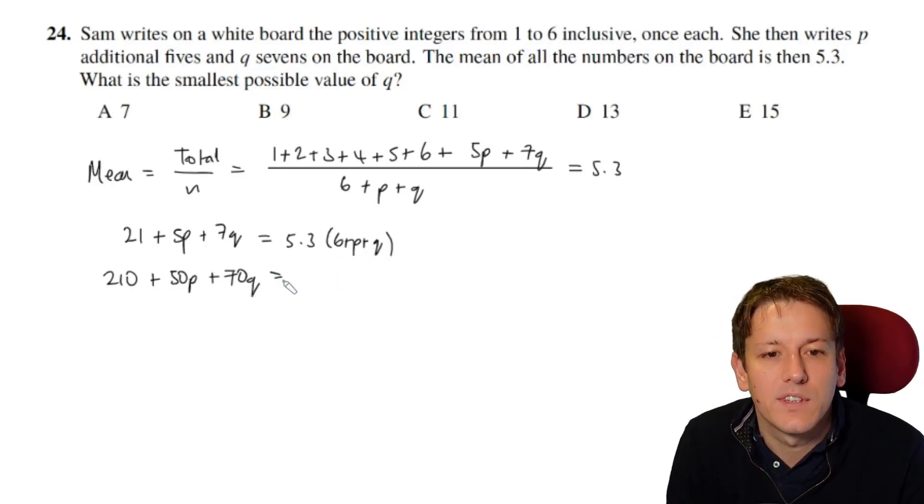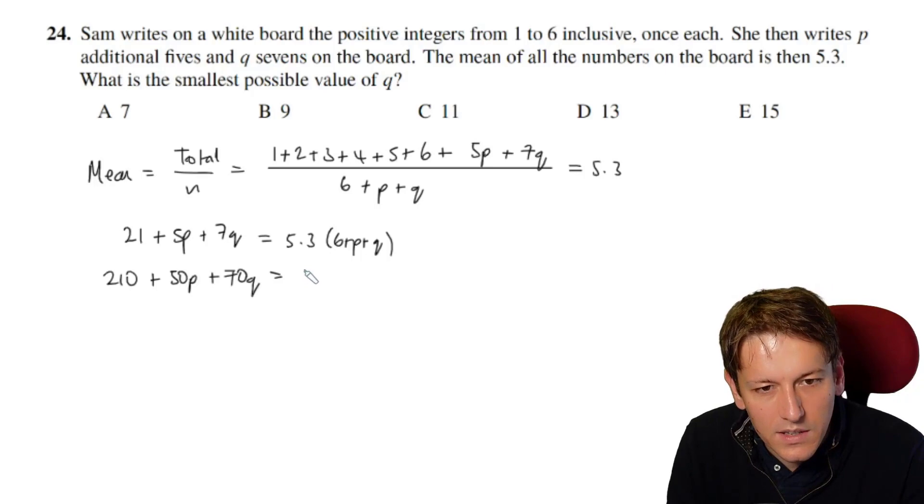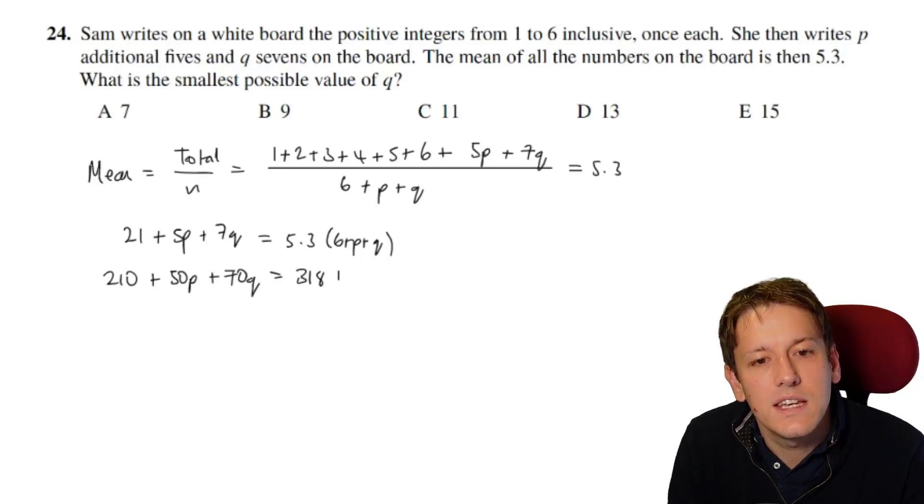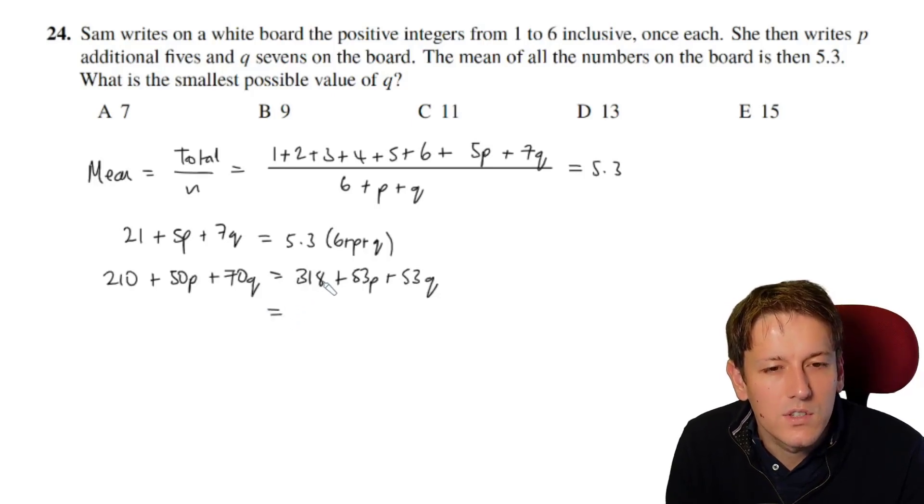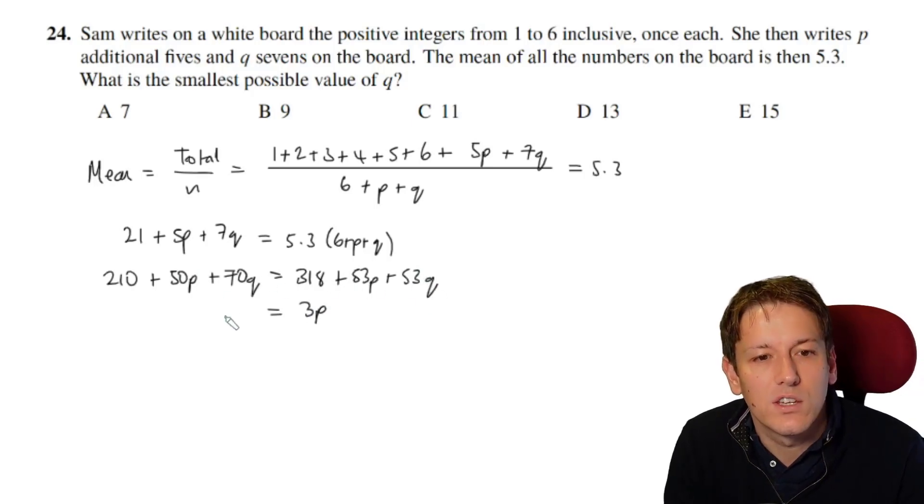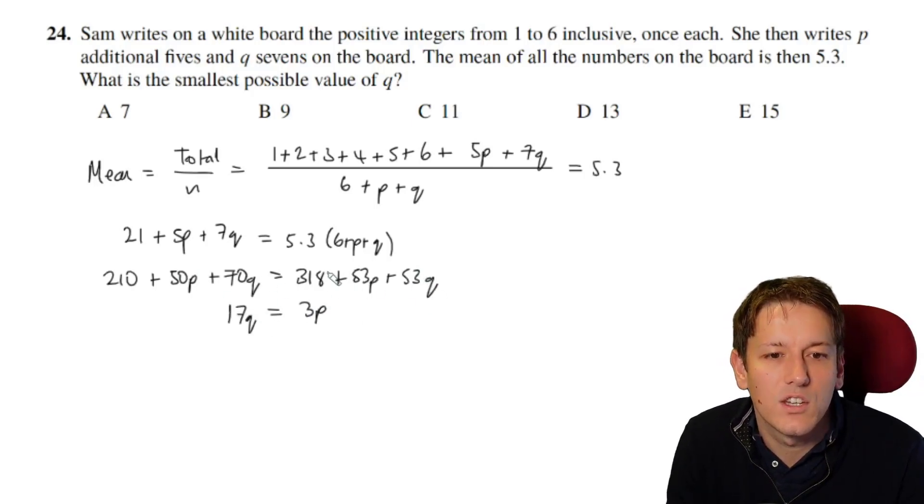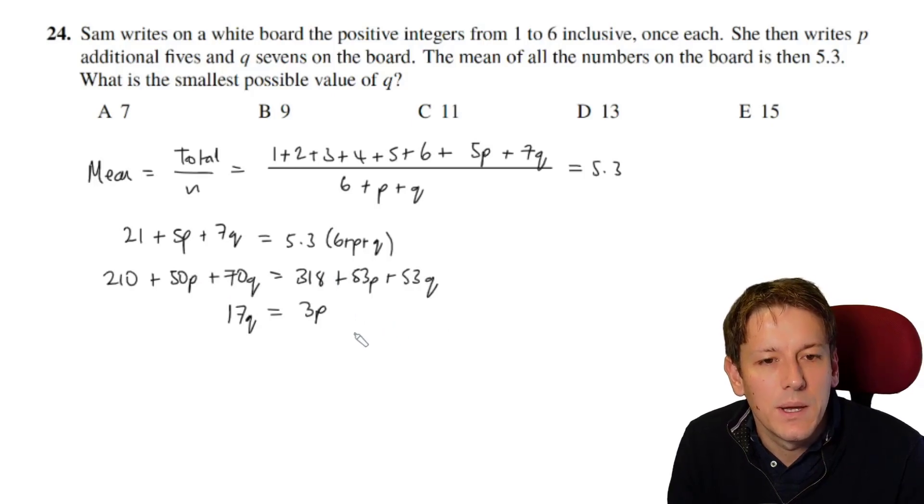So we multiply that out, 53 times 6 gives us 318, and then I've got 53p and 53q. So if we tidy this up a little bit, subtract 50p from each side, I'm going to have 3p here, subtract 53q from each side, I'm going to have 17q here, and 318 minus 21 is 108.